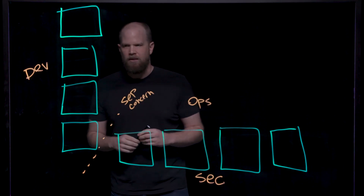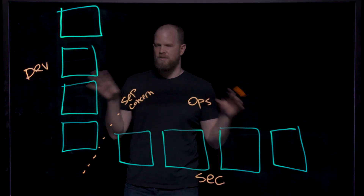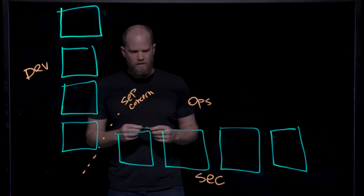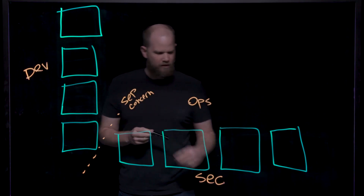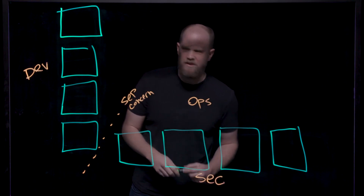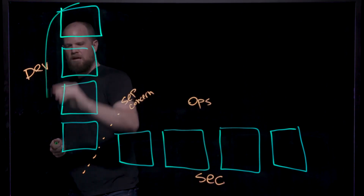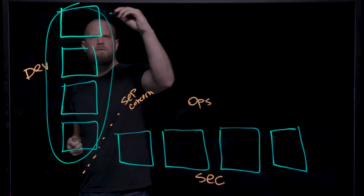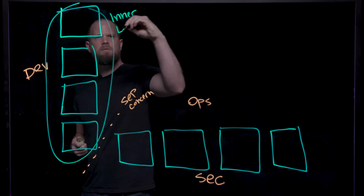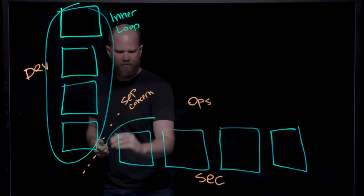When we look at the two areas of the platform, there are two main loops that we talk about from a development lifecycle perspective: your inner loop and then your outer loop.